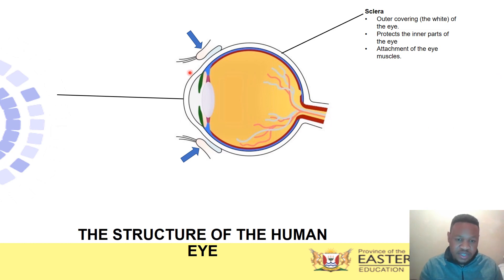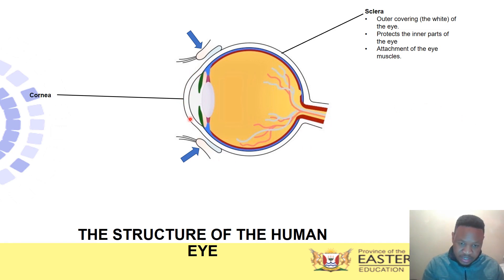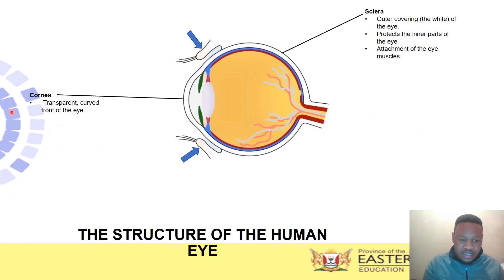Another function of the sclera is to attach the eye muscles, which enable our eyes to change direction — to see up, down, and sideways. The muscles that change the direction of the eye arise from this outer layer, the sclera. On the front of the eye, the anterior part, there is a thin, clear, transparent membrane that protects the cornea — this is called the conjunctiva.